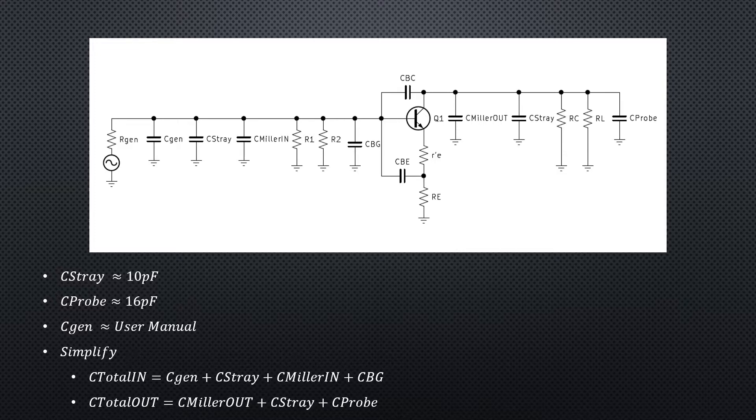Now let's talk about stray capacitance. Stray capacitance will be seen on the output and input, approximately 10 picofarads. If you hook your probe to the output for measuring, you'll see approximately 16 picofarads also. You'll also have some generator capacitance that you'll need to look up in your specification or user manual.